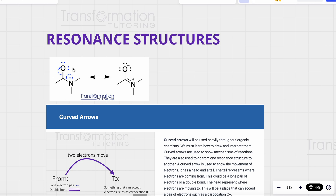In order to represent our molecule correctly and represent the location of electrons around this molecule, we have to draw multiple resonance forms for molecules that are capable of multiple resonance forms. We have to understand that a molecule is a hybrid of all of its resonance forms at the same time.